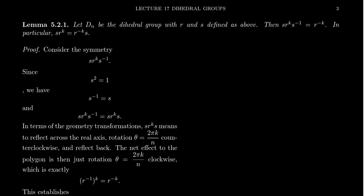D_n is an example of a non-abelian group — the elements do not necessarily commute. What we get instead is a commutation relation: although R and S are not equal and RS and SR are different symmetries, if ever you have an S to the left of an R, you can move the R past the S.